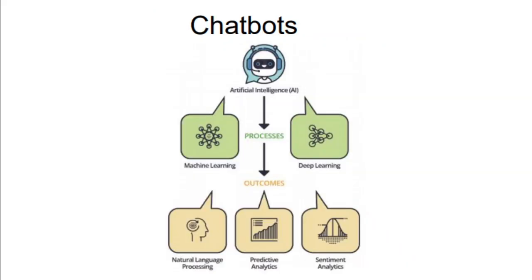When we talk about chatbots, artificial intelligence and natural language processing are among the biggest technologies used in making them. You can converse with anyone using your mobile phones, smartphones, or laptops and receive automatic replies. It is based upon natural language processing, predictive analysis, and sentiment analysis.